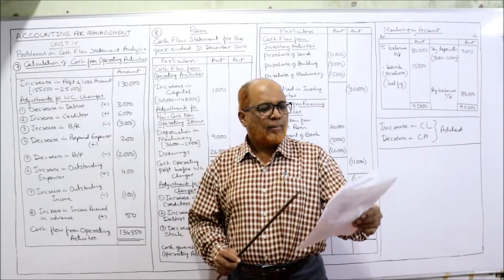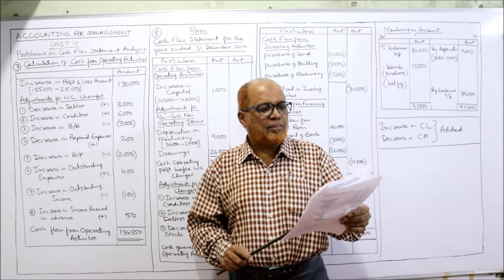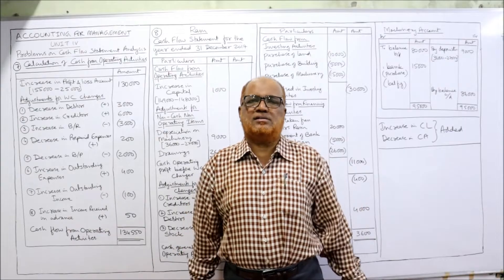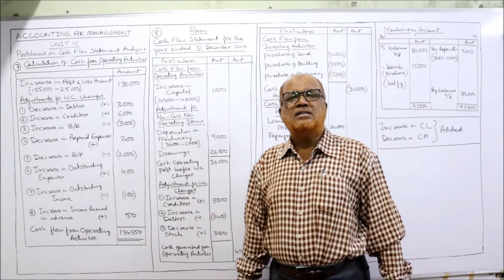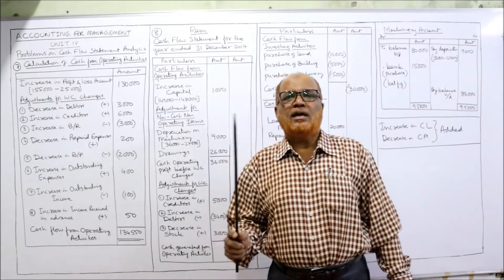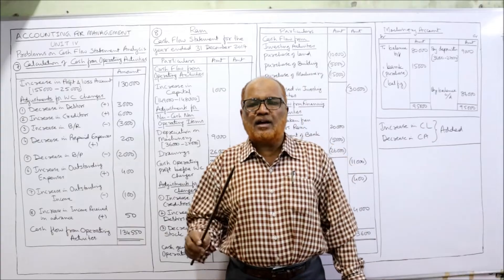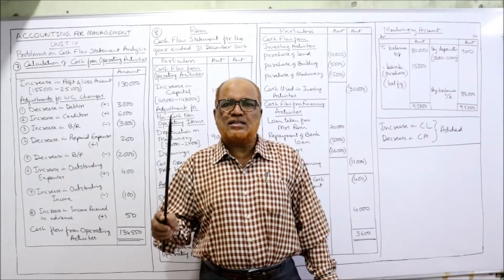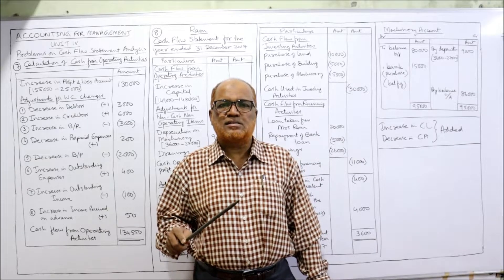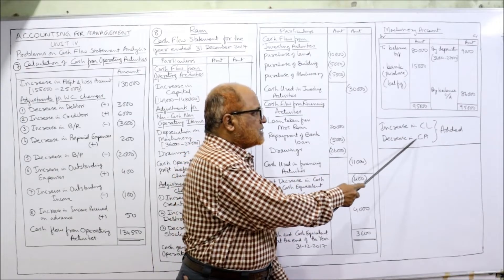To this profit we adjust non-cash and non-operating items, but in our problem no such items are given. We are given debtors, creditors, bills receivable, prepaid expenses, bills payable, outstanding expenses, outstanding income, and income received in advance — all these are current assets and current liabilities. So to the profit we adjust working capital changes. The rule is: increase in current liability and decrease in current assets should be added; decrease in current liability and increase in current assets should be deducted.